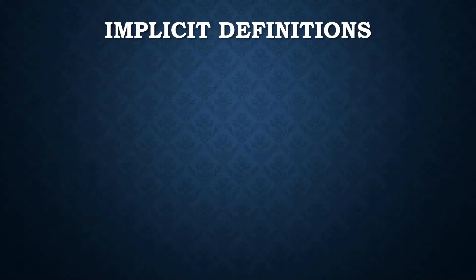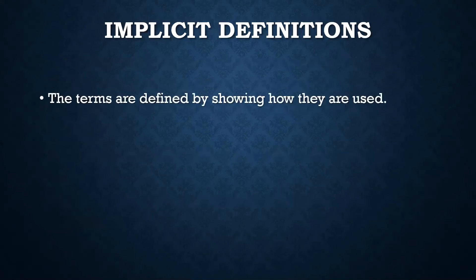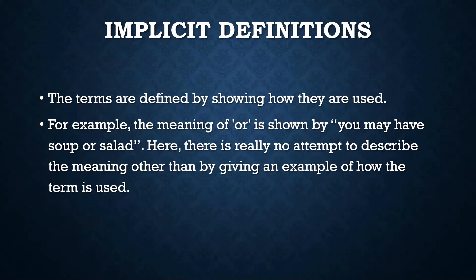There are implicit definitions as well. Very similar to syntactic definitions, you might define a term by showing how it's used rather than providing a meaning. Implicit definitions are when you merely give examples of how the word is used in a sentence or phrase, rather than attempting to provide a lexical definition or stating the meaning directly.